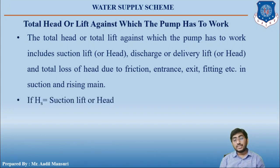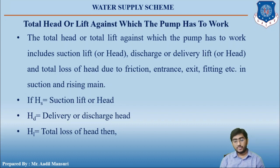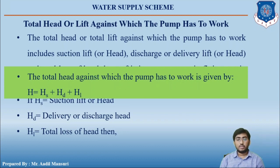If hs is the suction head, hd is the delivery head, and hl is the total loss of head due to friction, entrance, exit, etc., then the total head against which the pump has to work is given by: H = hs + hd + hl.